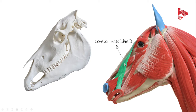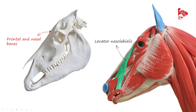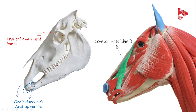The next muscle is the levator nasolabialis, or the nasolabial levator muscle. This muscle originates from the frontal bone and the beginning of the nasal bone. It inserts into two areas: the first is the orbicularis oris muscle, and the second is the upper lip.